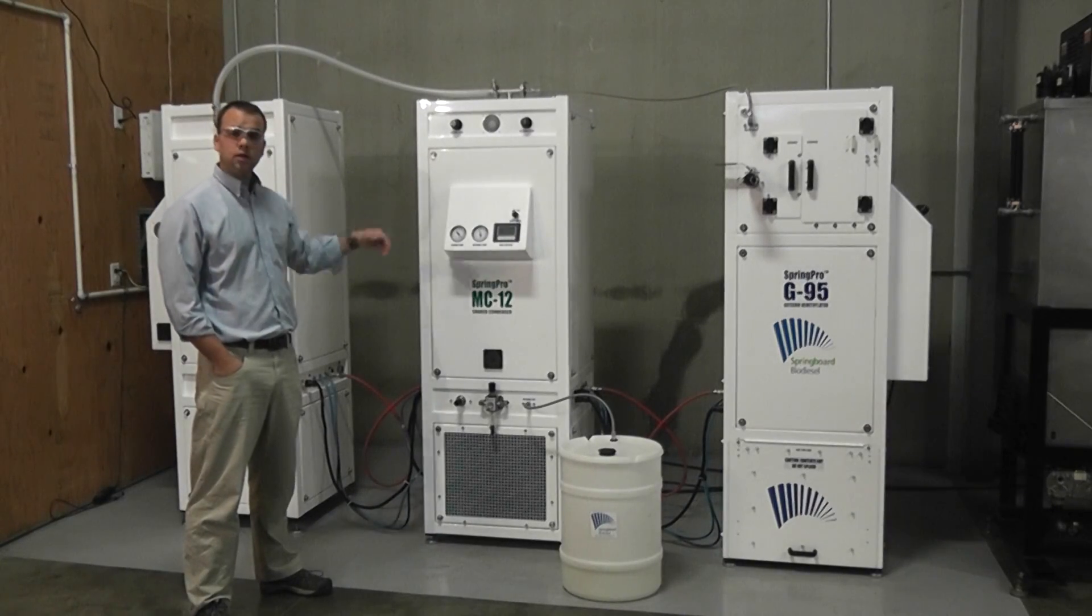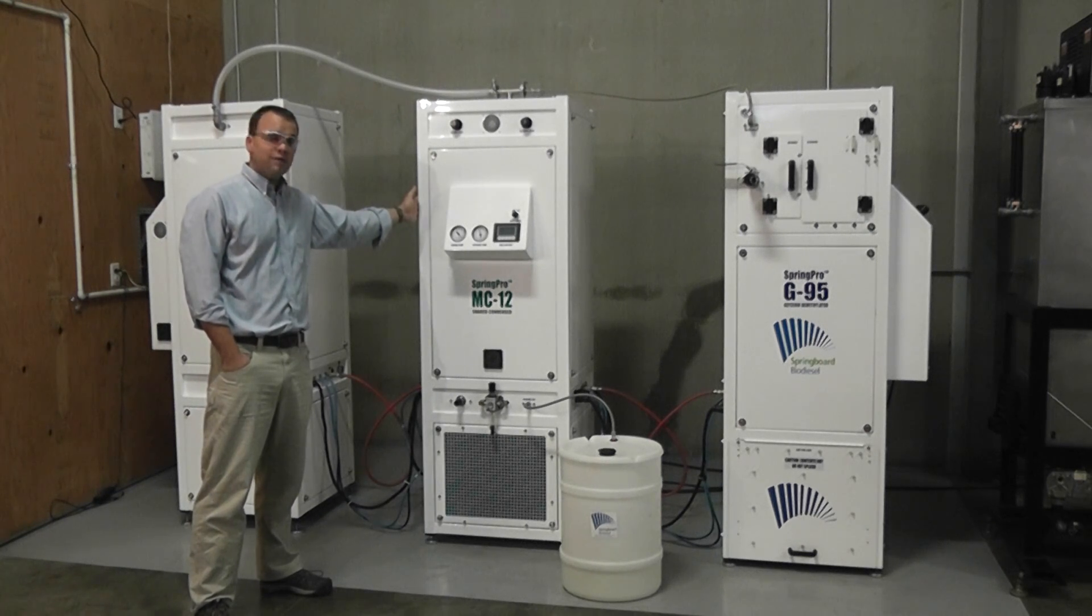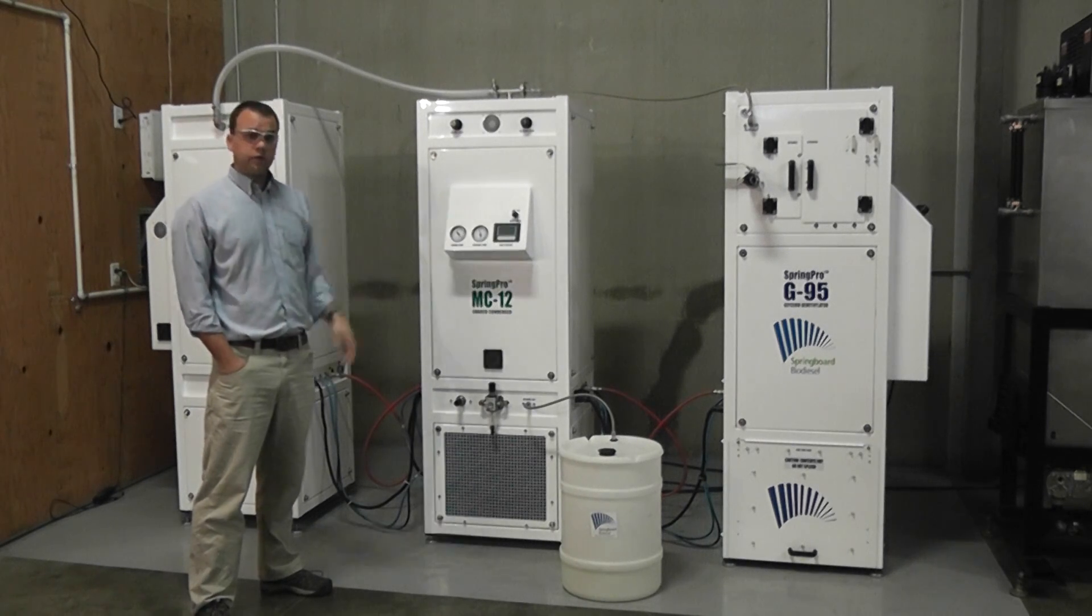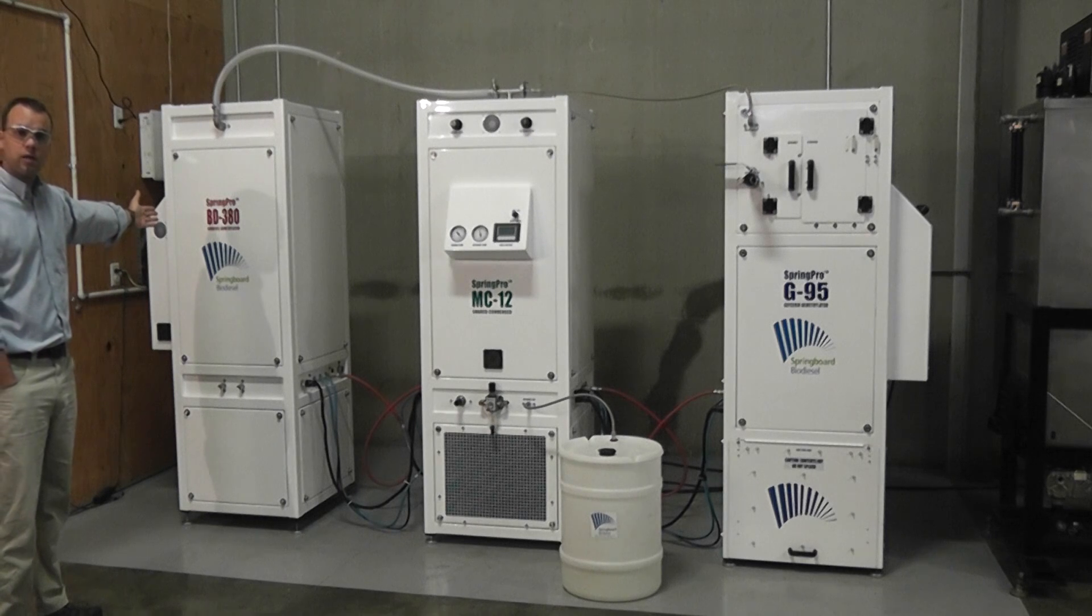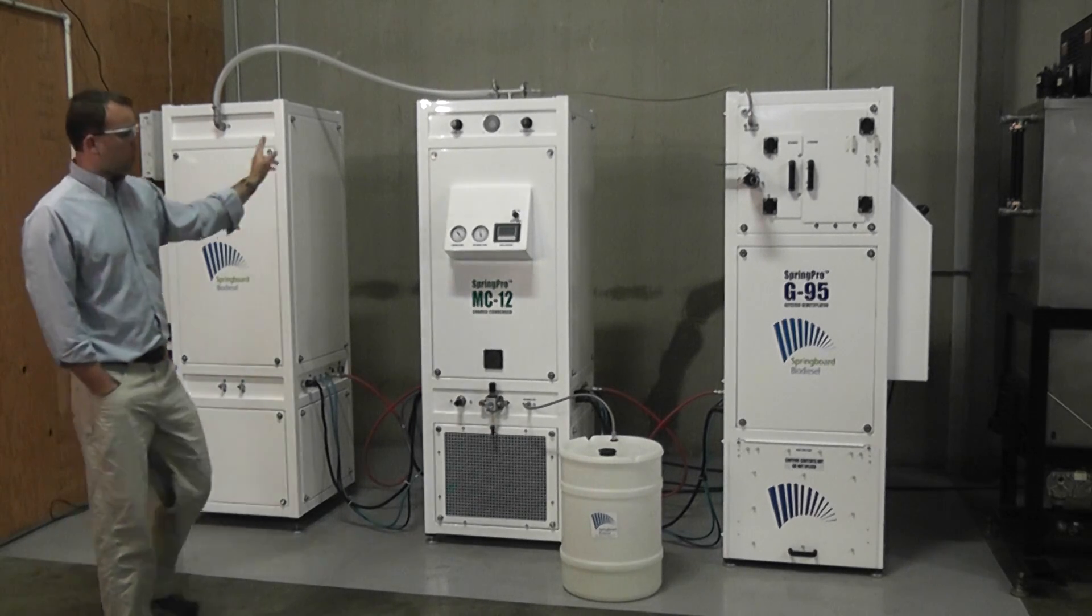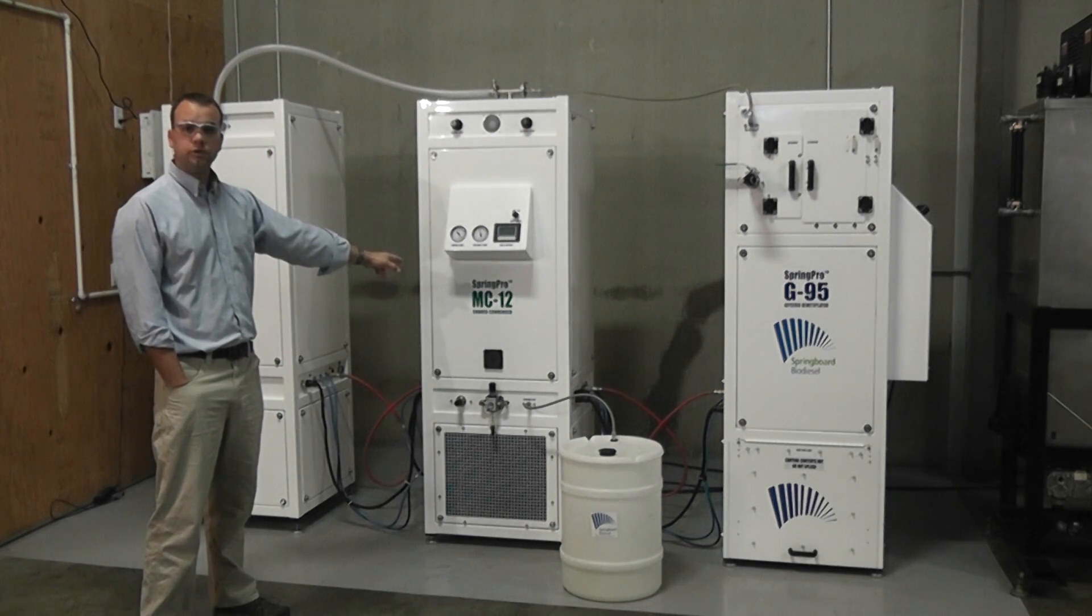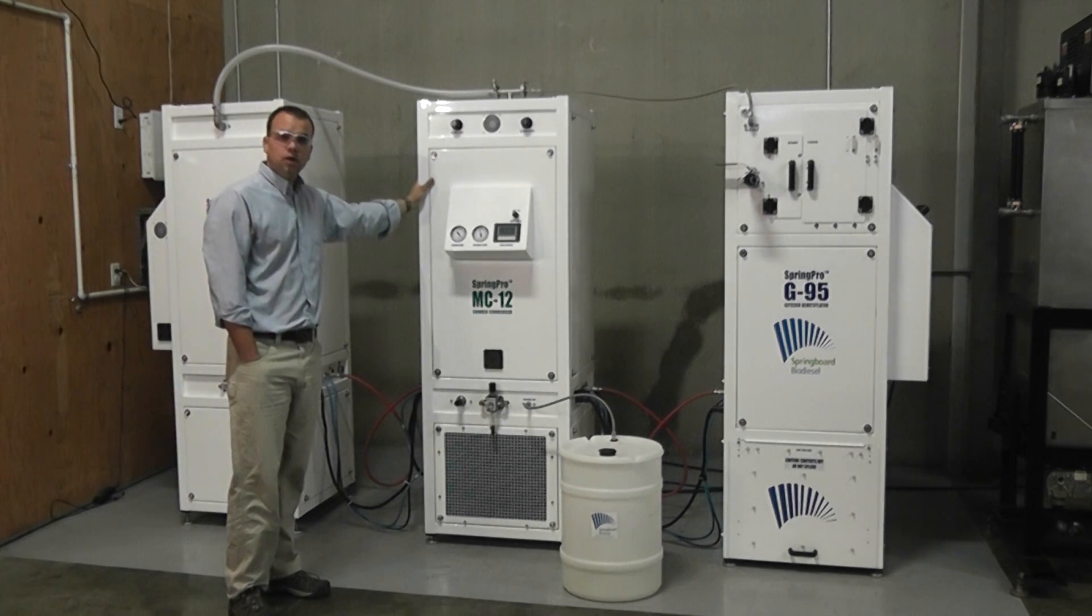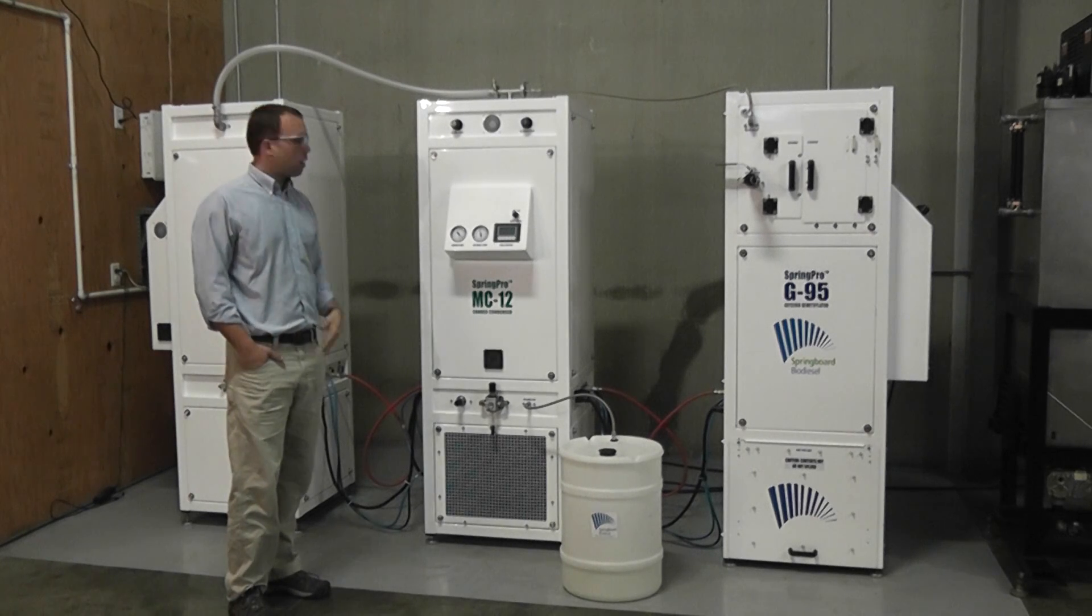Okay, so I've plugged in the electrical and air supply here to the MC12. You may have noticed I didn't plug any cords or air lines into the G95. I also have another machine behind me, the BD380 Biodiesel demethylator, which I'm not going to talk about today. But both this machine and the G95 share the use of this MC12 methanol condenser. So that's why I only have to plug in power and air for this machine and both of these other two machines derive their air and electrical power from this one.